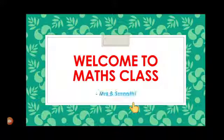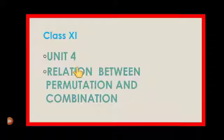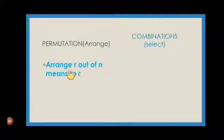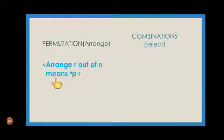Welcome to Max class, children. In this class we are going to see Unit 4: the relation between permutation and combination. Permutation means arrangement. If you are asked to arrange R things out of N objects, the notation we write it as NPR.